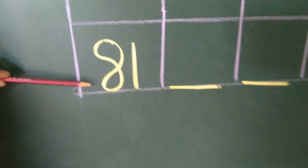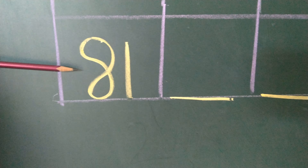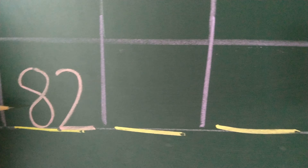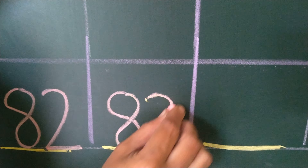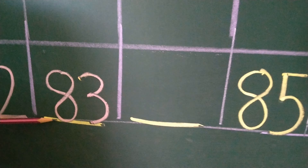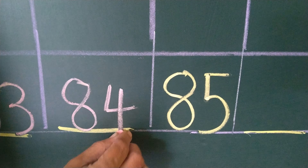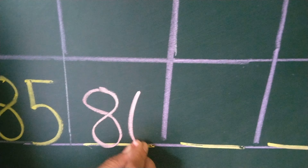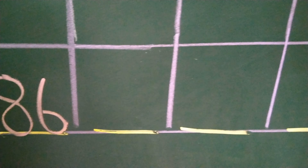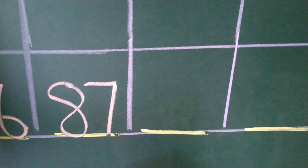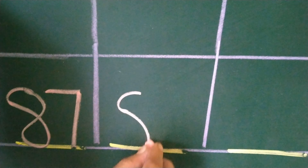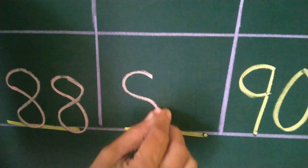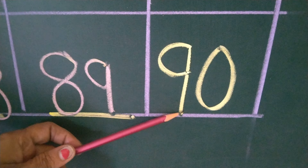Now see the last line, student. What is this? This is 81. After 81, which number comes? 82. Next number is after 82, which number comes? 83. After 83, which number comes? 84. Next number is after 86, which number comes? 87. After 87, which number comes? 88. We have to use forward counting to solve the missing numbers. After 88, which number comes? 89. And last number is 90.